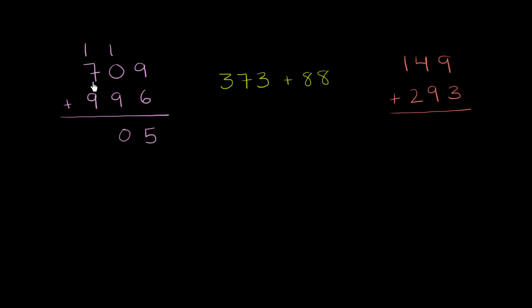So now we have 1 plus 7 plus 9. That is going to be 17. Now, we have to remind ourselves, this is in the hundreds place. So this is actually 100 plus 700 plus 900, which is 1,700. And of course, we still have this 5 here. We are done.